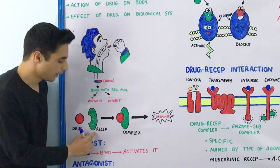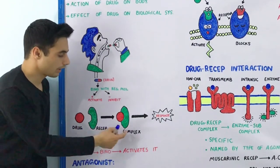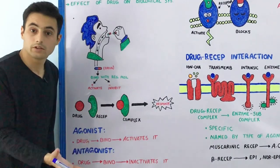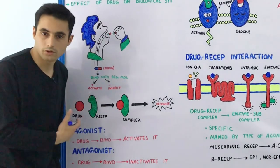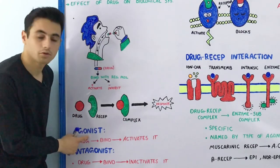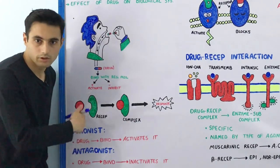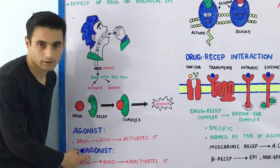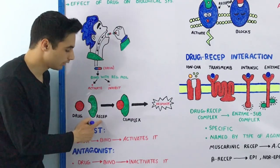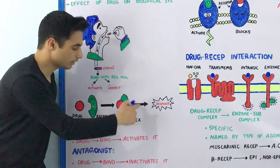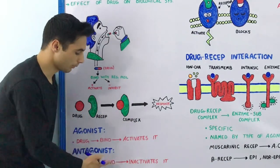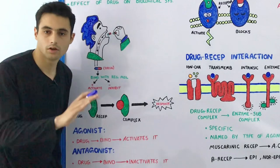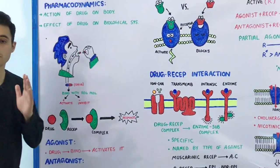When the drug binds with the receptors and activates them, initiating a biochemical or physiological response, the drug is known as an agonist. The opposite of the agonist is the antagonist — the drug binds with the receptors and inactivates them. This is known as the antagonist; it decreases the activity of the receptor.